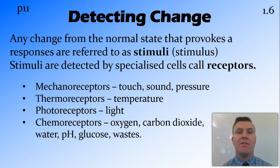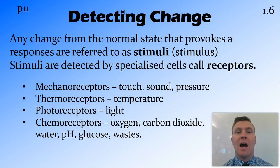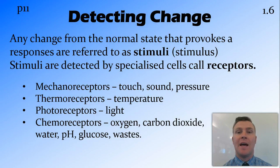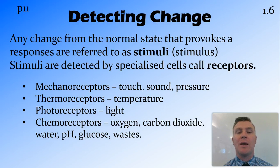There are a few different types of receptors in the body. Mechanoreceptors detect touch, sound, and pressure — moving things. Thermoreceptors detect temperature. Photoreceptors detect light, including colour and different strengths of light. And then we have chemoreceptors, which detect concentrations of different chemicals — for example, oxygen, carbon dioxide, water, pH, glucose, and waste products such as nitrogen in the blood.